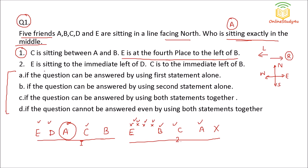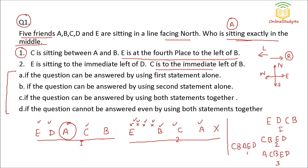Now let us see statement two: E is sitting to the immediate left of D, and C is to the immediate left of B. Again we will have more possibilities — first possibility, second possibility, third possibility. We will not be able to answer who is sitting in the middle from statement two alone. Since the question can be answered using the first statement alone, option A is the correct answer.